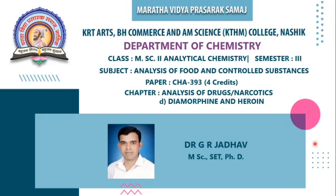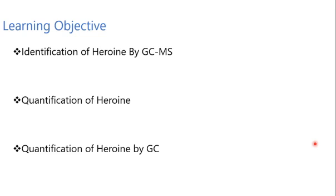Hello students, today we will see the next topic in diamorphine and heroin. In the previous lecture we discussed bulk and trace analysis of heroin, various presumptive testing such as color tests, and thin layer chromatography. Now we will discuss the identification of heroin, followed by the quantification of heroin, and then quantification of heroin by GC.